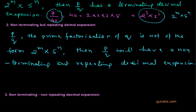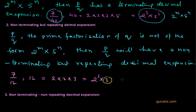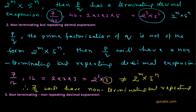Let me give you a very interesting example. Suppose we have the rational number 7 over 12. If we factorize 12, we get 2 × 2 × 3, which we can write as 2 to the power 2 multiplied by 3. We see that we cannot cancel out the 3 from both numerator and denominator, so this 3 remains in the denominator. Therefore, this is not of the form 2 raised to M multiplied by 5 raised to N, and so 7 over 12 will have a non-terminating but repeating decimal expansion.